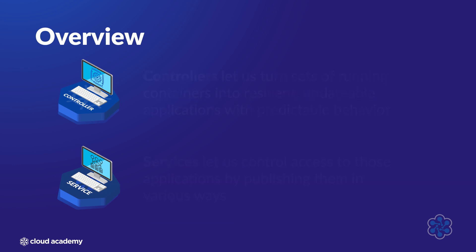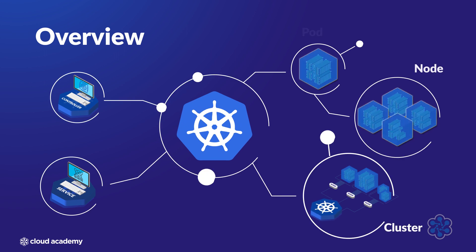If you understand these five terms — cluster, node, pod, controller, and service — then you now know enough Kubernetes to get your hands dirty. In the next short lesson, we're going to do just that. We'll review setting up a cluster and preparing a container for deployment using GKE.